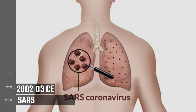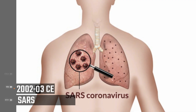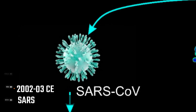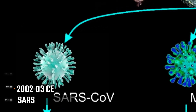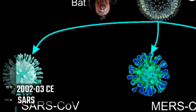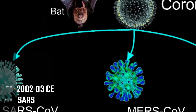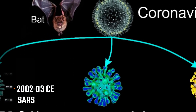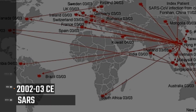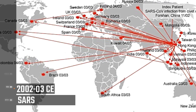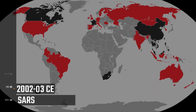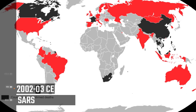SARS, 2002 to 2003. Severe Acute Respiratory Syndrome (SARS) is a viral respiratory illness caused by a coronavirus called SARS-associated coronavirus (SARS-CoV). SARS-CoV is thought to be an animal virus from an uncertain animal reservoir — perhaps bats — that spread to other animals (civet cats) and first infected humans in Guangdong Province in southern China in 2002. The death toll is estimated to be around 770.